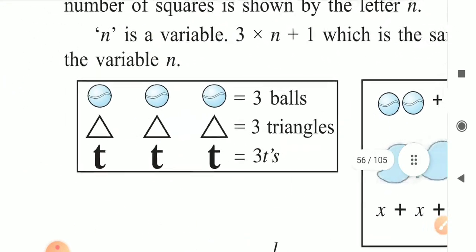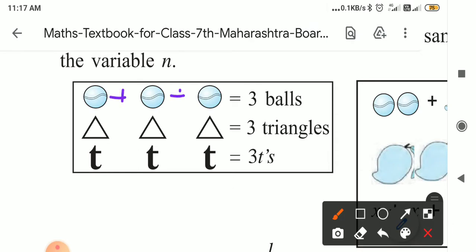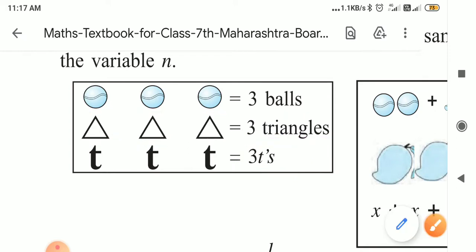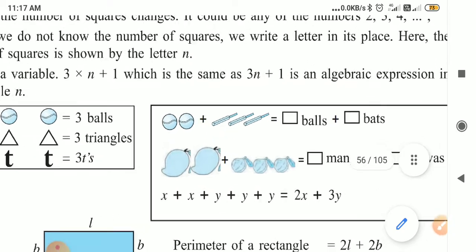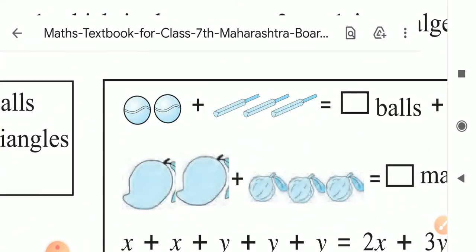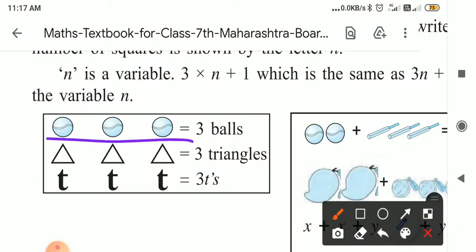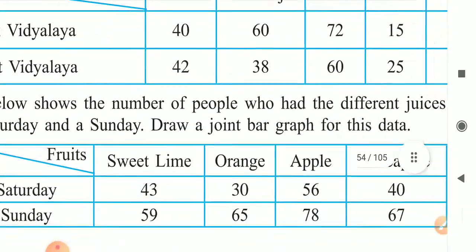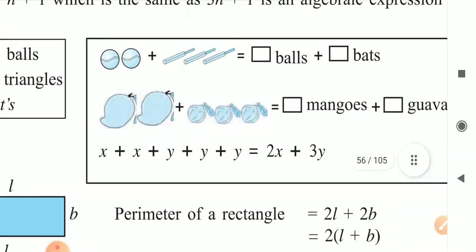Now here are some additional examples. Tell me how many balls are here? Three balls. How many triangles are there? Three triangles. How many t's are there here? Three. We count them and understand how many balls, triangles, and t's are there. Now, can we add the ball and bat together? The answer is no. We cannot add bat and ball together, because bat and ball are two different things.